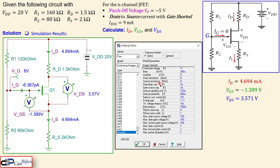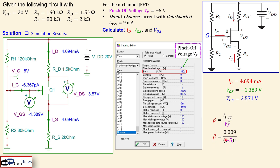One thing to note about the simulator: it uses a parameter called beta, which is different from the BJT current gain beta. For the JFET, beta has units of amps per volt squared and is defined as IDSS divided by VP squared. Substituting: beta = 0.009 / (minus 5)² = 360 microamps per volt squared. There is no direct IDSS parameter in the simulator's list — you must compute beta from IDSS and the pinch-off voltage and enter that value to get correct simulation results.